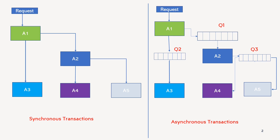But if you see in the right-hand side diagram, the system is the same, but now the communication is happening via message queues. So there is no direct communication between the microservices like A1, A2, A3, A4, A5 — they are kind of decoupled. Suppose A1 wants to connect to A2. It will not send a direct call to A2, but it will push a message into a message queue, and from the message queue, A2 will pick it up and do the processing.